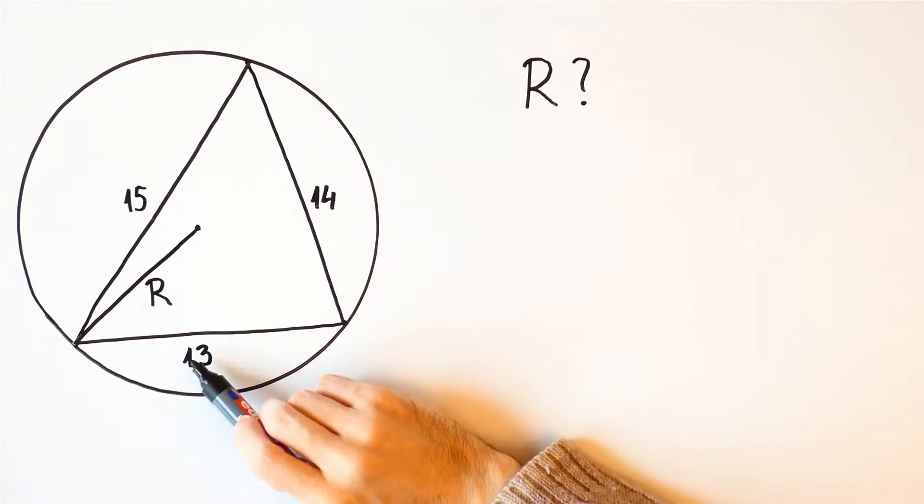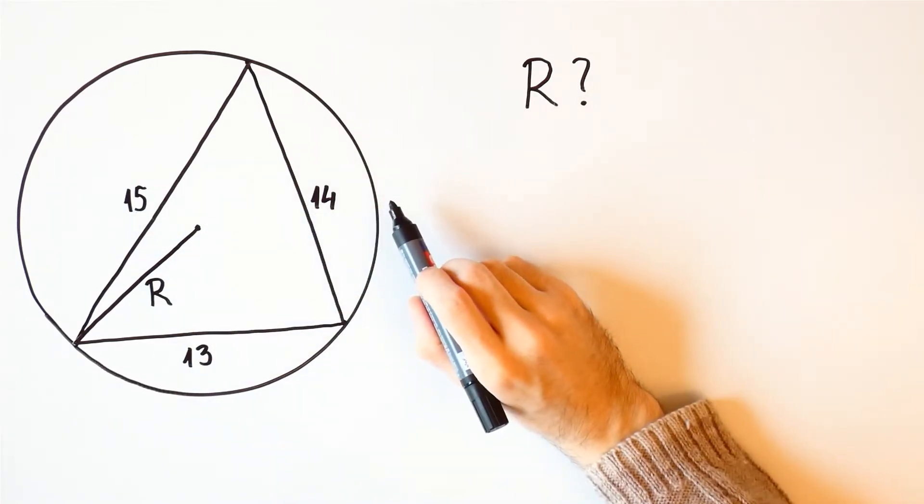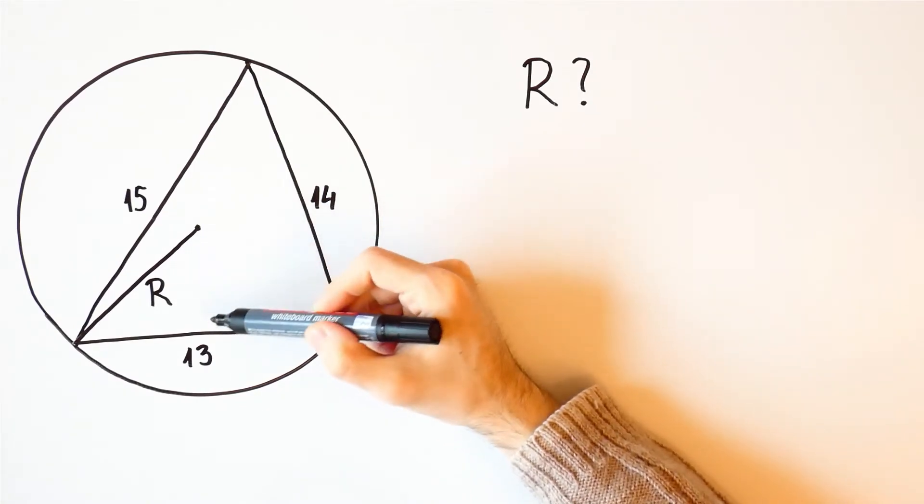Here again we have a triangle with sides 13, 14, and 15. In the previous two videos we saw what is the area of that triangle and the radius of its inscribed circle.